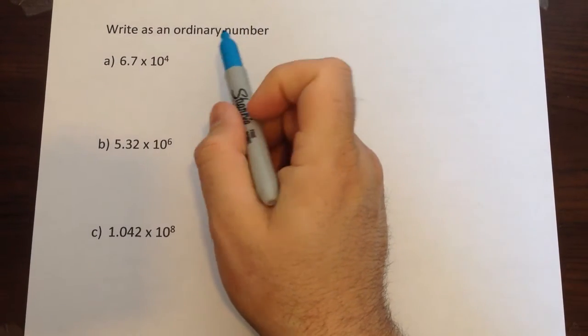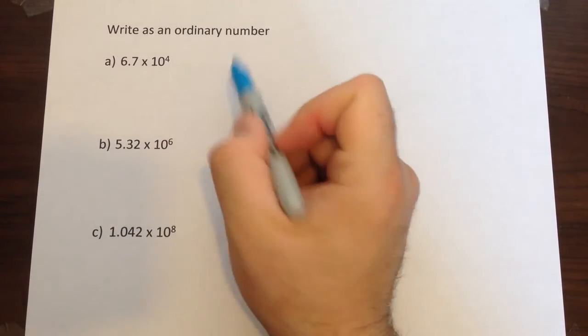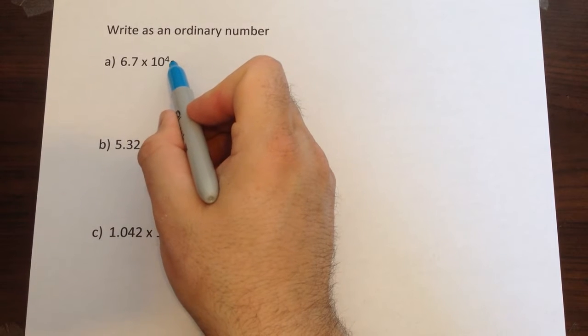This video is going to show you how to convert from a standard form number with a positive index back to an ordinary number. So let's start with the first one, 6.7 times 10 to the power of 4.